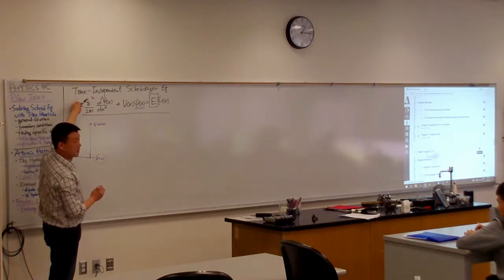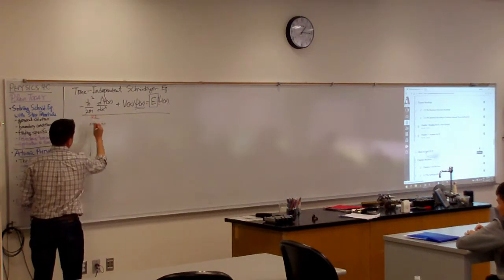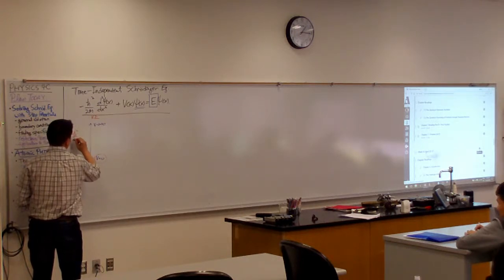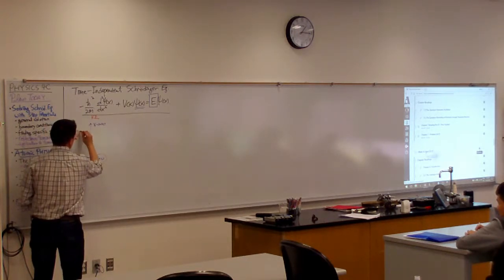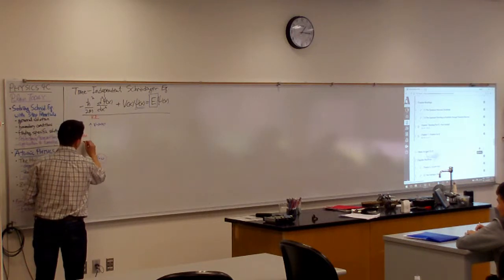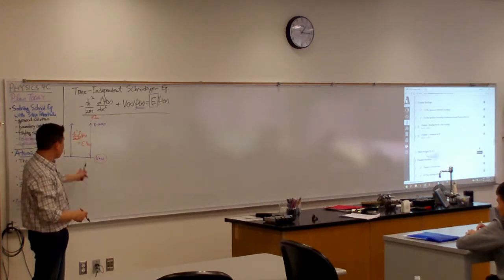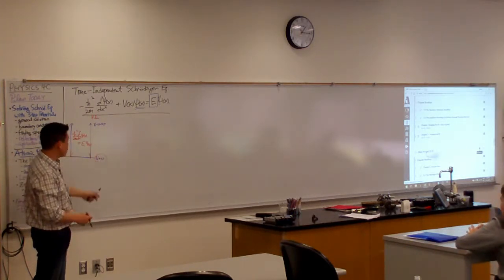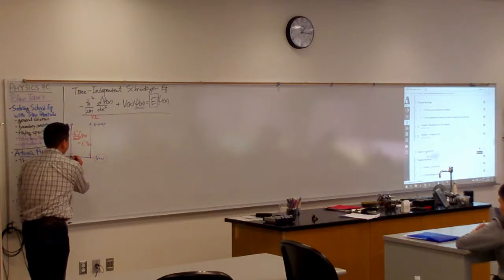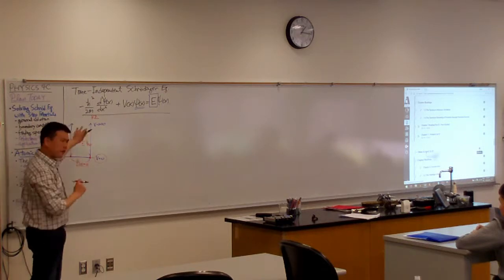So the Schrödinger equation becomes pretty simple. It simply becomes the kinetic energy term, minus h bar squared over 2m, double position derivative of wave function, is the energy wave function. And we get an oscillatory solution. You get sines and cosines with these matching boundary conditions that, at the end, the wave function has to be zero. That'll ring a bell?